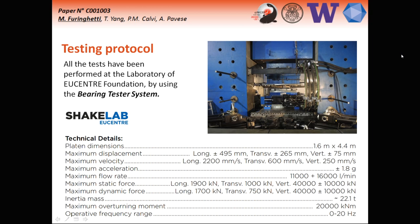The testing protocol has been carried out at the central laboratory in Pavia, Italy, by using the variant tester system of the Shake Lab. The overall setup is able to perform tests along two orthogonal directions. The technical details include a very high maximum displacement for longitudinal and transverse directions, very high maximum velocity, a maximum allowance for the vertical load of the device, and an operative frequency range from zero to 20 Hz.